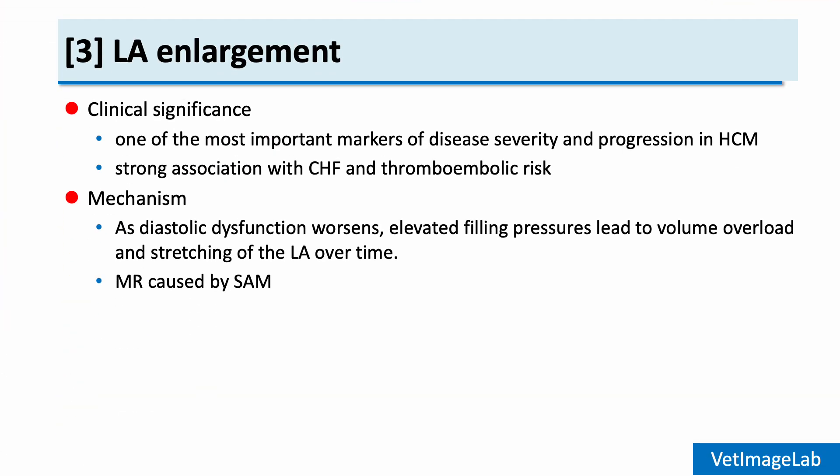Now let's move on to the third evaluation factor in evaluating cats with HCM: left atrial size. Left atrial enlargement is one of the most important markers of disease severity and progression in HCM. As diastolic dysfunction worsens, elevated filling pressures lead to volume overload and stretching of the left atrium over time.